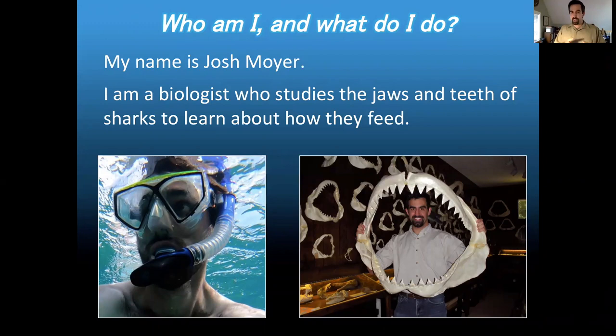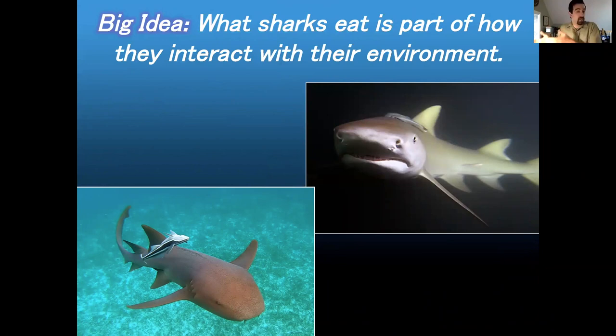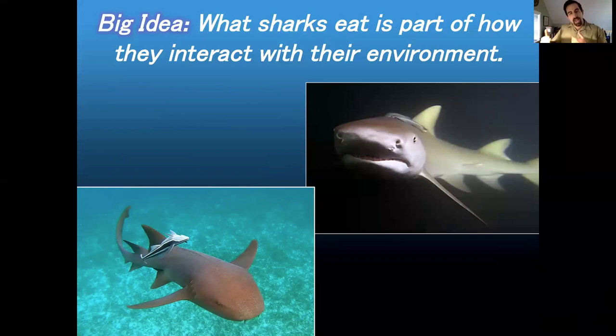A big theme in my research is the idea of what a shark eats and how it interacts with its environment. When we talk about how an organism — whether it's a shark or another fish or any other animal or plant — interacts with its environment, we call that its ecology. Ecology is looking at how an animal interacts with its environment and with the other animals around it.